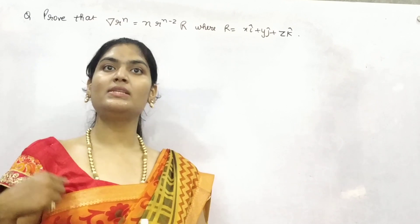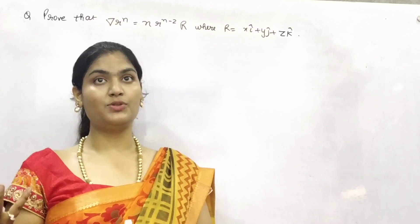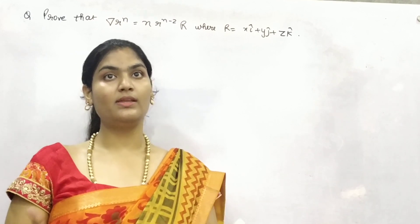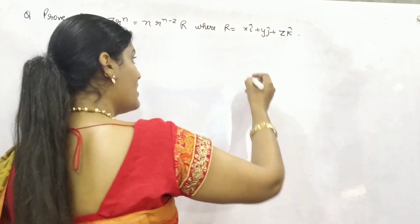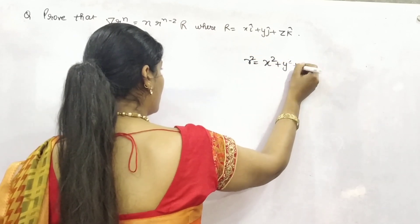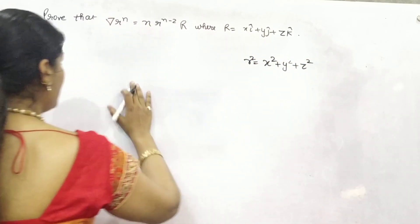Similarly, if you are taking sphere, that means 3 dimension, so x square plus y square plus z square is equal to R square will be the equation of sphere. So, this is the equation.